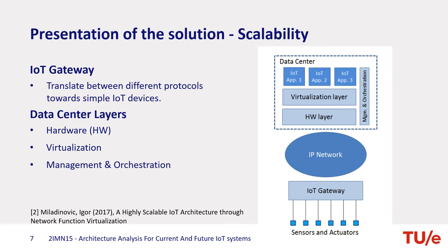A data center contains the following layers. The hardware layer is composed of hardware components including storage, network interfaces, and CPUs. It provides a scalable and elastic hardware platform shared among all IoT applications and other network functions. The virtualization layer is an abstract layer that, by using the physical hardware resources, provides virtual machines towards the IoT applications. The management and orchestration layer is responsible for the lifecycle management of the IoT applications and the coordination of resources across different IoT applications.